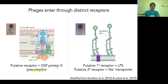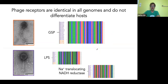Having identified those receptors, we looked at the diversity of these genes in the hosts. Perhaps not surprisingly given how closely related they are, we found them completely monomorphic — absolutely no SNPs in these genes — which means the phage can always get into the cells and that the defense is actually internal.